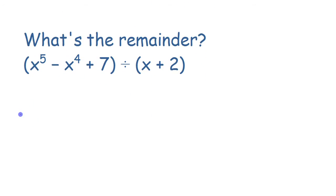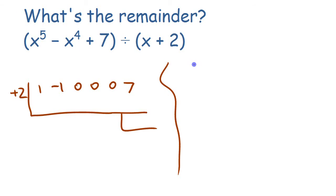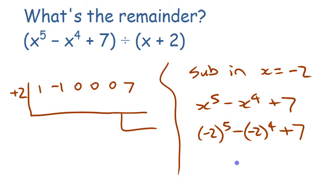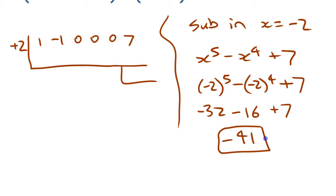Now let's use the theorem to quickly find the remainder for this next division. You could do it using long division or synthetic division — you'd have to put in all the coefficients: one x to the fifth, negative one x to the fourth, zero x to the third, zero x squared, zero x, and seven. That's a lot of coefficients. But the Remainder Theorem says just substitute x equals negative two, the root of the divisor, into the polynomial. There are only three terms: negative two to the fifth, minus negative two to the fourth, plus seven. That's negative 32 minus 16 plus 7, which gives negative 41. That's the remainder.